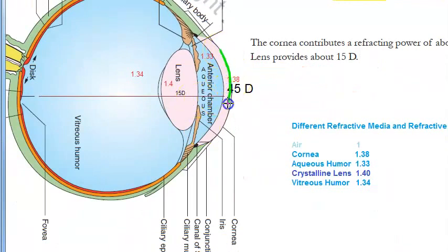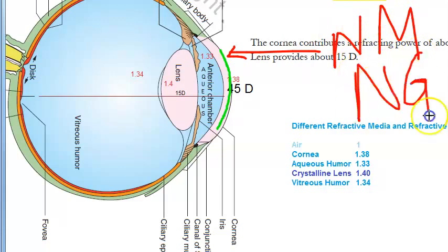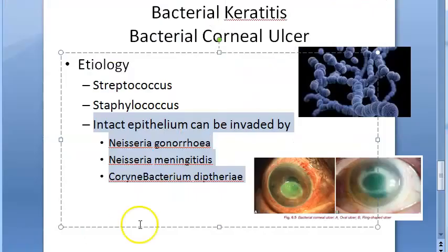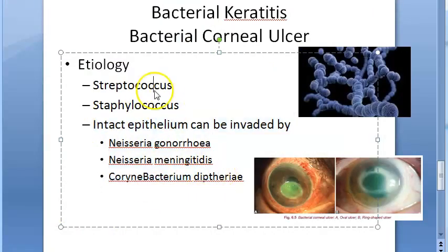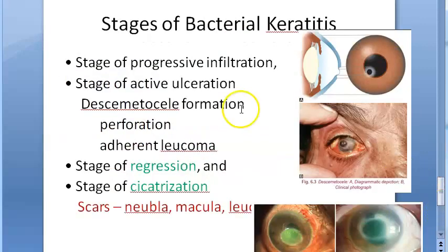Those organisms that can attack an intact epithelium are: Neisseria meningitidis, Neisseria gonorrhoeae, and Corynebacterium diphtheriae. Other than these, many other bacteria exist — Haemophilus, Moraxella, and many more.